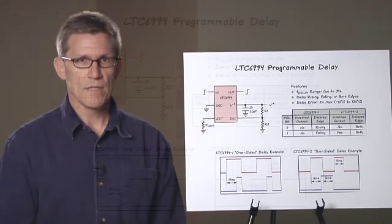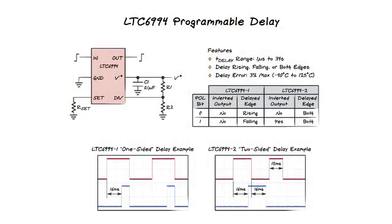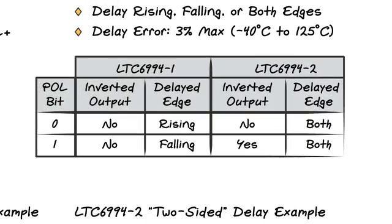Our last part in the family is the LTC6994 programmable delay, which comes in two versions. The LTC6994-1 delays only one edge. The polarity of that edge, whether it's rising or falling, is set via the div pin's A-to-D. The LTC6994-2 delays both edges,